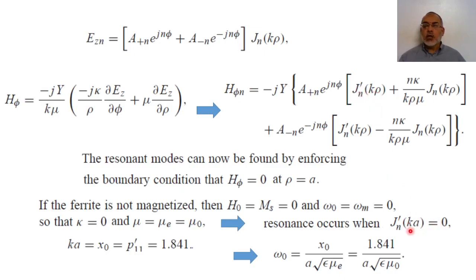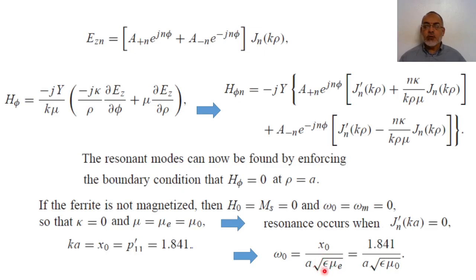From this condition we obtain the resonant frequency for the ferrite resonator. The resonant frequency of the dominant mode TM110 is omega_0 = x_0 / (a * sqrt(epsilon * mu_e)), where x_0 = 1.841, a is the radius of the ferrite disk, epsilon is the permittivity, and mu_e for an unmagnetized ferrite is simply mu_naught. This is the resonant frequency of the dominant mode in a circular ferrite resonator.